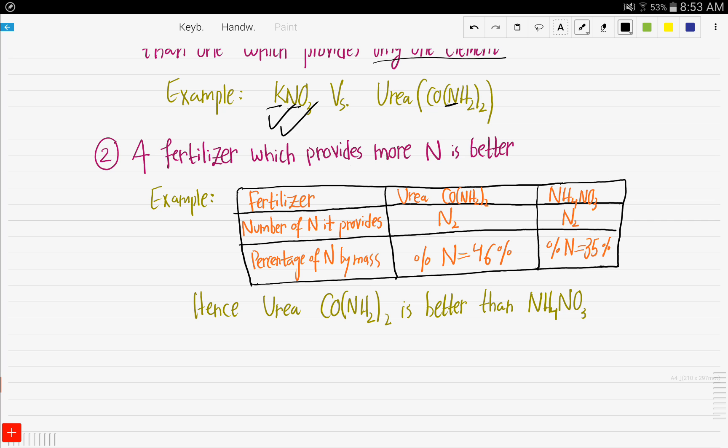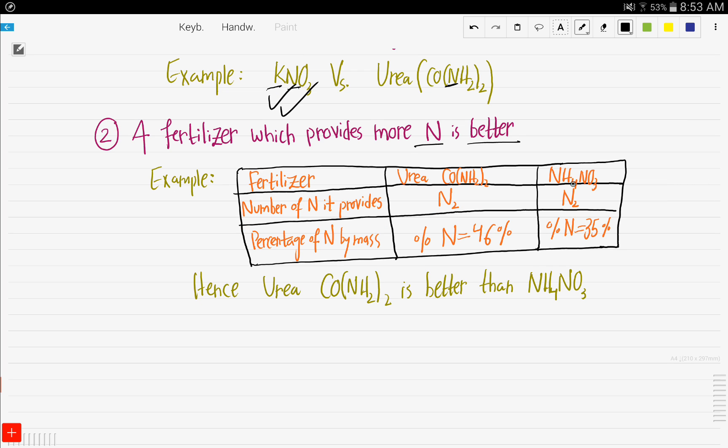The second factor that you should put in mind is that a fertilizer which provides more N is better. So let's see an example here. We have urea and we have ammonium nitrate. The number of N it provides is 2, N2. Here you see the 2. And when it comes to ammonium nitrate, it also provides N2.